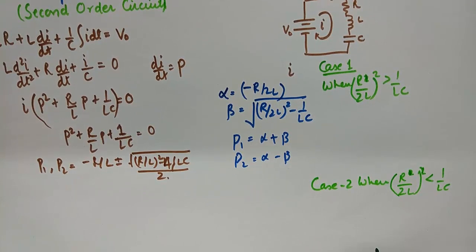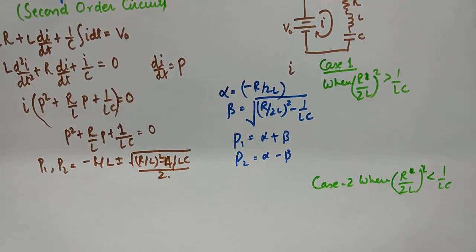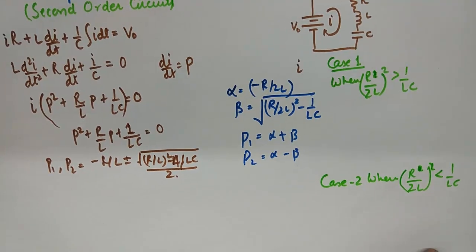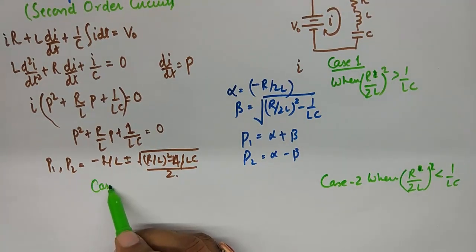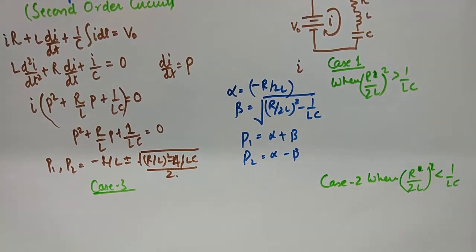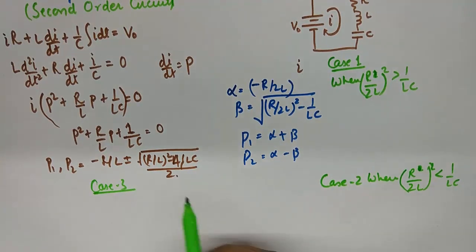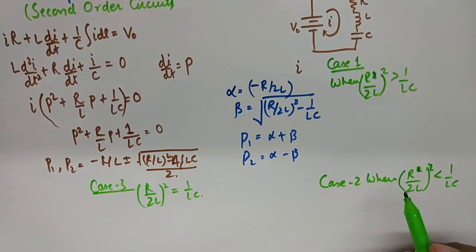And the second case will be when R square upon 2L is less than 1 upon LC. In this case, beta will be imaginary and then roots P1 and P2 are complex conjugates. And finally, case number 3 will be when R upon 2L square is equivalent to 1 upon LC. This time beta will be 0.